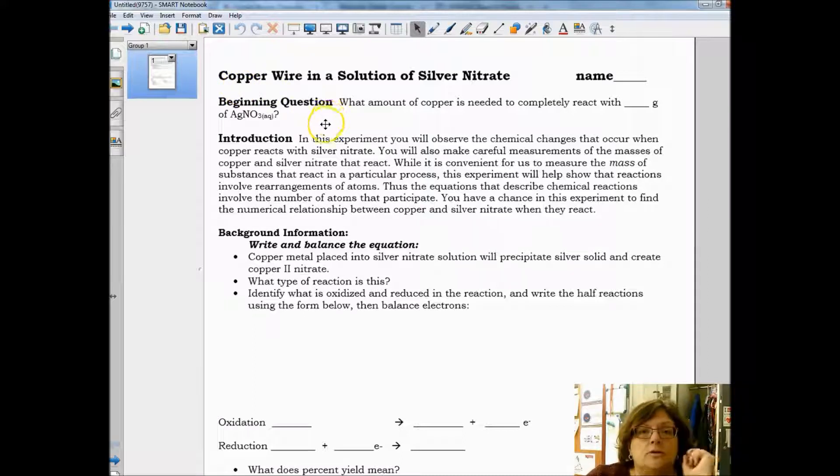Write your beginning question in your lab notebook. We're going to be looking at a single replacement reaction, copper and silver nitrate. The silver will replace the copper. That's also a redox reaction, so we're going to review oxidation reduction.